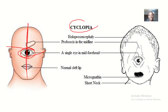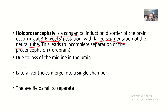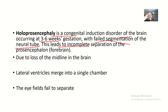This failed segmentation means the neural tube is supposed to divide so that each side develops as a mirror image of the other — that's why this side of your face looks exactly like the other side. If there's failed division, it will lead to the child having just one eye. This is where holoprosencephaly comes in — it leads to incomplete separation of the prosencephalon, which is the forebrain, and the forebrain is what develops into a complete head.